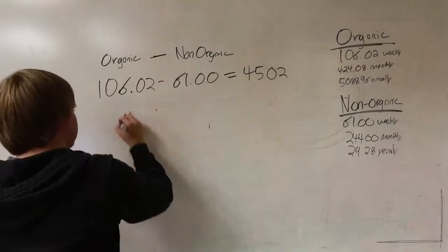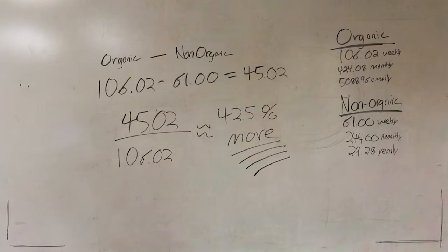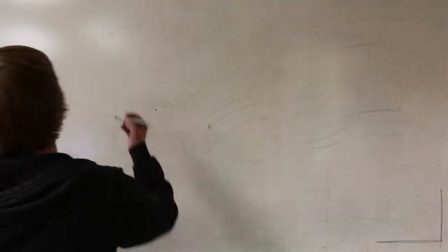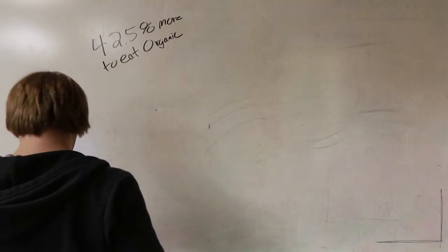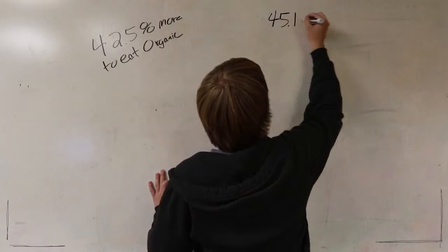Then if you calculate the percentage difference between the two costs, you end up with about 42.5%. So that $45 difference we talked about, that breaks down to about a 42.5% more increased cost to eat organic.